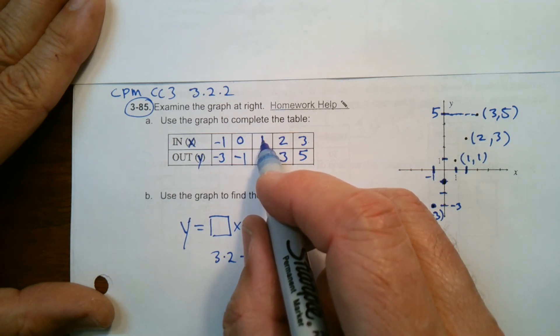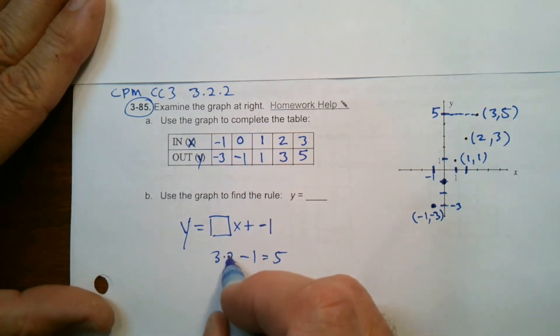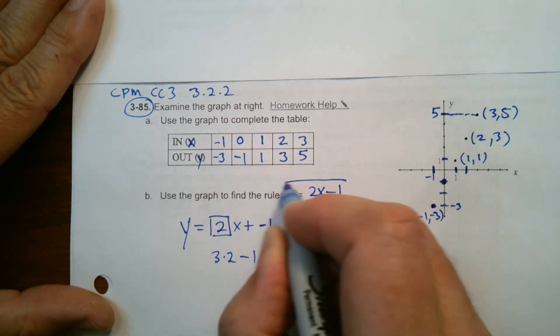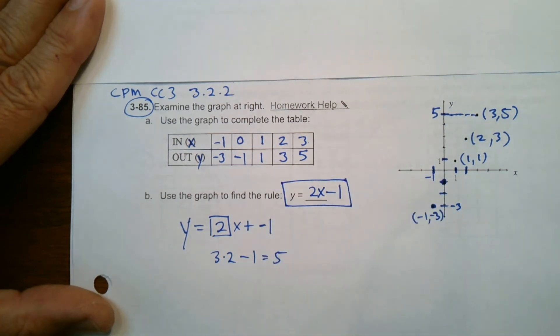2 times 1 is 2 minus 1 is 1. Yes, so that works. So that would be 2 times whatever value that is. So my rule would be Y is equal to 2X minus 1. That would be the way to write it.